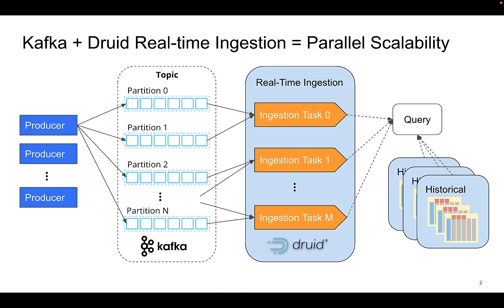At the high level, at the ecosystem level, one thing to understand is that Druid's real-time ingestion is parallel from end to end. This starts all the way at the producers — mobile phones or devices that generate messages and publish messages to a Kafka topic in very high numbers. They're highly parallel, each independently generating messages and submitting them to a streaming engine. We're showing Kafka here, but it could be Kinesis, and they use very similar concepts to enable parallelism and scalability.